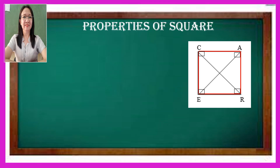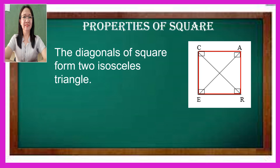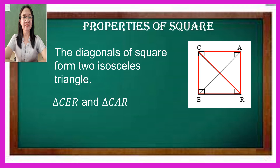Another property of square is about the diagonals. The diagonals of a square form two isosceles triangles. If we draw diagonal CR, the two isosceles triangles are triangle CER and triangle CAR. However, if we draw diagonal AE, the isosceles triangles are triangle ACE and triangle ARE.